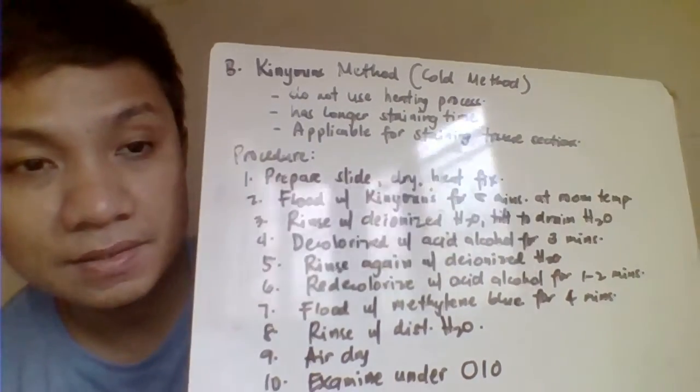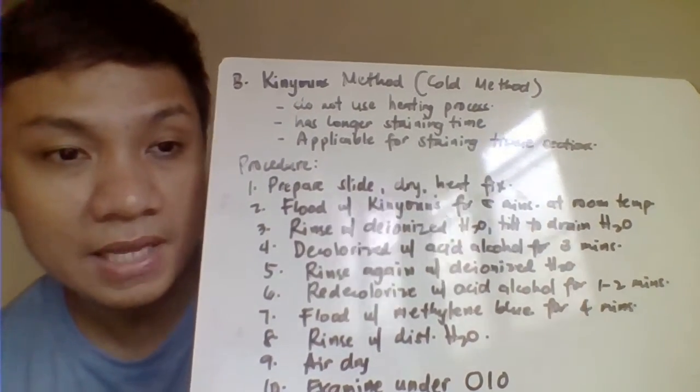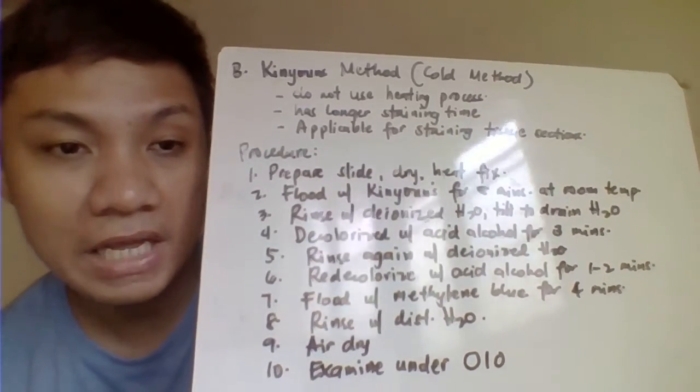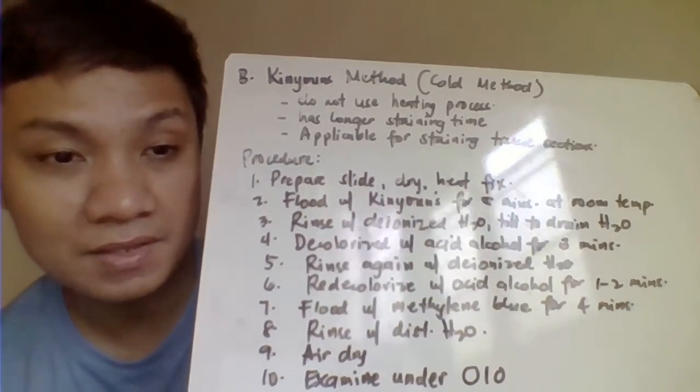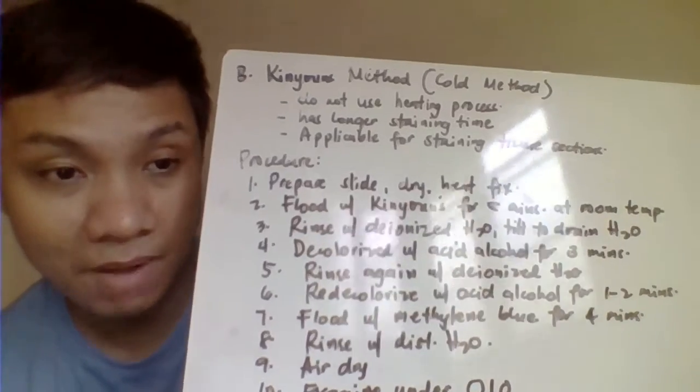So your Kinyon is basically applicable here for staining of our tissues, for identification of our acid-fast bacilli, which has infected your different tissues in your body.